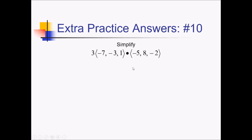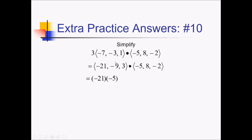On this problem, I've got some choices as to what order I do things in — it turns out you can do these multiplications in any order you want. But I'm going to distribute this 3 and then do the dot product. So the first vector I'm going to rewrite as (negative 21, negative 9, 3). Now doing the dot product, I multiply all the x's, y's, and z's and add those products together. So we have negative 21 times negative 5, plus negative 9 times 8, plus 3 times negative 2. This comes out to 105 minus 72 minus 6. 105 minus 72 is 33, minus another 6 is 27.